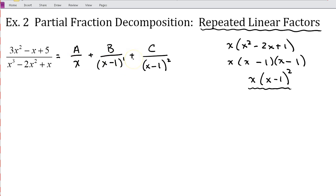So now we've got these three different fractions and we have to find A, B, and C. So same process as before. I'm going to go ahead and multiply through by x times x minus 1 squared. So then for my fraction on the left, I'm simply left with 3x squared minus x plus 5. And next, I'm left with A times x minus 1 squared. My second fraction, I'm left with Bx times x minus 1. And finally, I'm left with Cx.